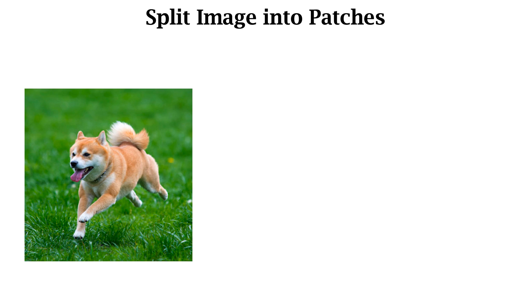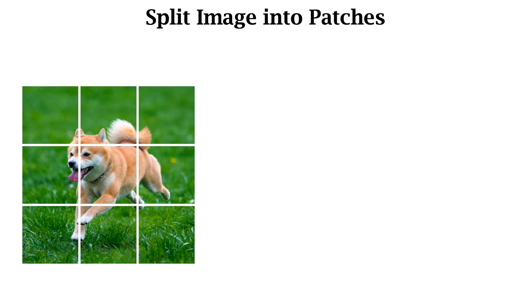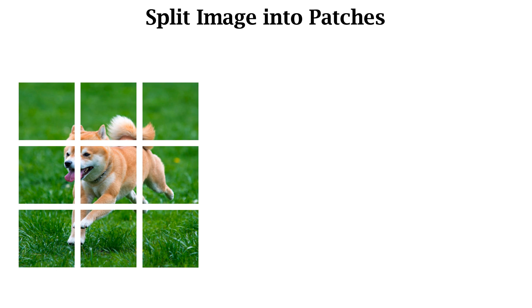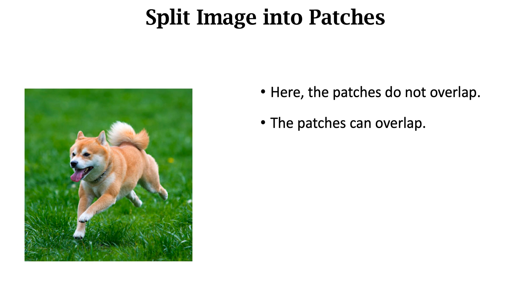I use this example to explain Vision Transformer. Vision Transformer requires partitioning the input image into patches of the same shape. For example, we partition the image into 9 patches of the same shape. In this example, the 9 patches do not have overlap. But it is totally fine to split the image into overlapping patches. It's up to the user.